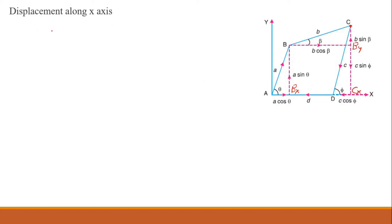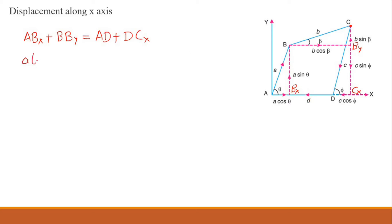For displacement along the x-axis, we can say that ABx plus BBx will be equal to AD plus DCx. ABx can be defined as A cos theta, BBx can be defined as B cos beta, DCx can be defined as C cos phi, and AD is the length D. So we write: A cos theta plus B cos beta equals D plus C cos phi.